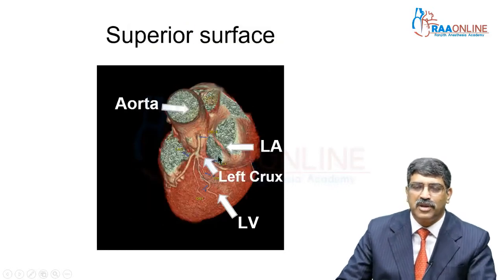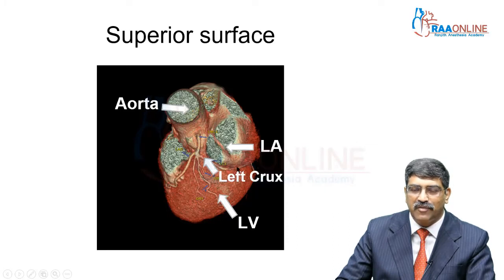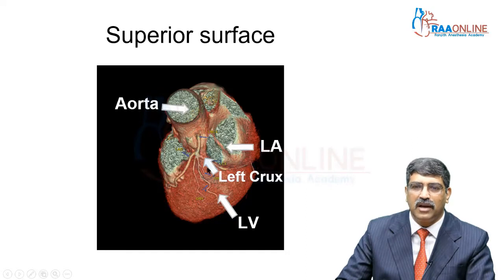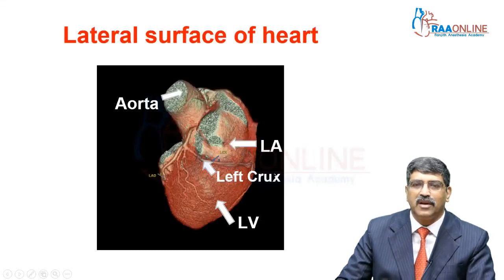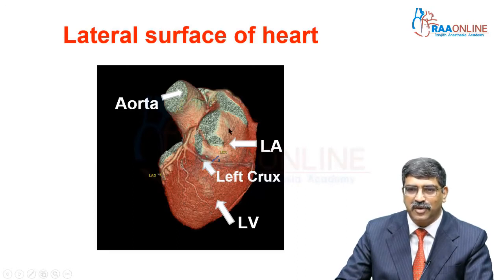Looking from the superior surface, this is the aorta, this is the pulmonary artery, and this is the left main coming from the aorta. You have the left atrium and left ventricle, and you can see the circumflex going in the left crux — the crux is between the left atrium and the left ventricle. Here you can see the obtuse marginal artery supplying the lateral part of the left ventricle. On the lateral surface, you can see the obtuse marginal vessel and the circumflex running in the left crux.